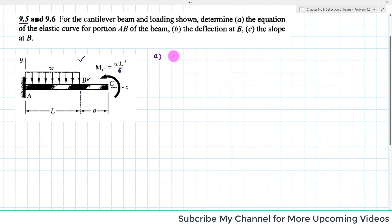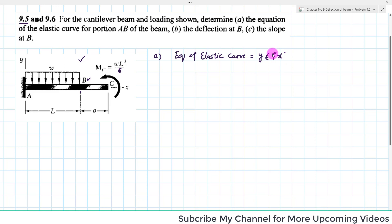For finding the equation of the elastic curve, which is equal to y as a function of x. In part B it is given that deflection at point B, and part C is slope at point B. So let's start with the solution.